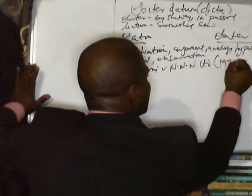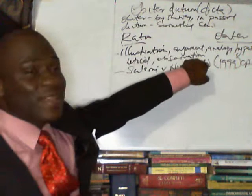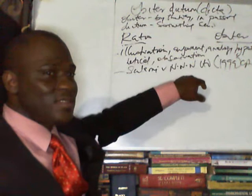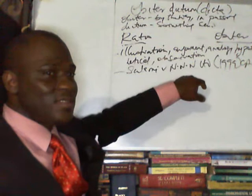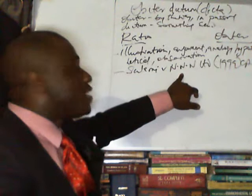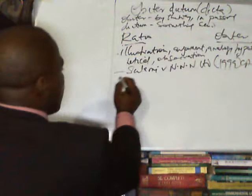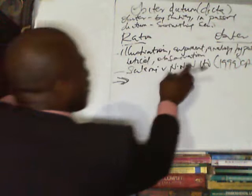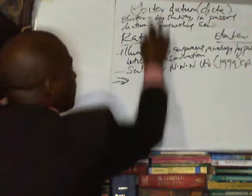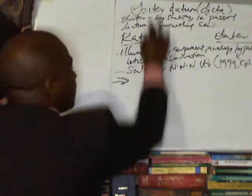In the Nigerian case of Salami v. NNN Limited, a 1999 decision of the Court of Appeal, the court held that an obiter is also an observation made by the judge on a legal question that is suggested by the case, but the legal question arises in such a circumstance that it does not call for determination. In other words, even though there is a legal question suggested by the facts, the court is not called upon to decide it — and so anything the court says on that question is actually an obiter.